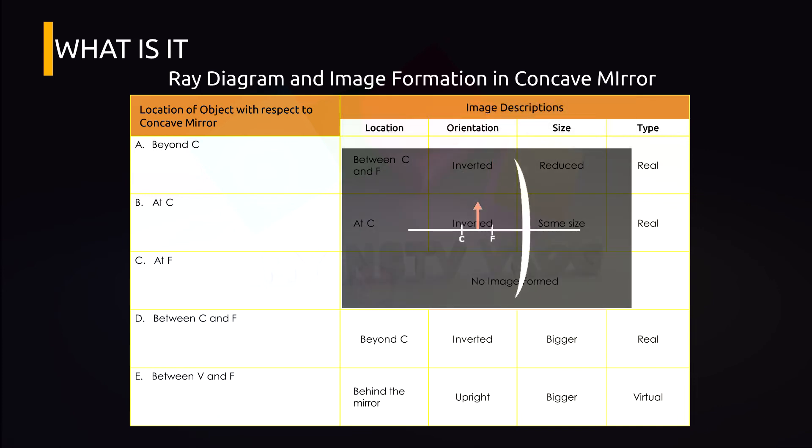So I will add another location of object which cannot be found in your module. The object is between C and F. So can you use the PF ray and V ray? So let's check your answer. The image location is beyond the center of curvature. The orientation is inverted, the size becomes bigger, and it's a real image. Did you get it right?